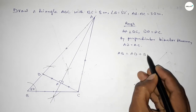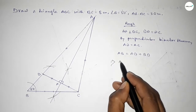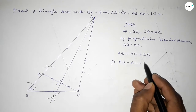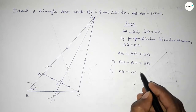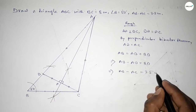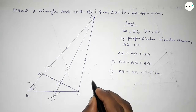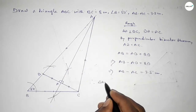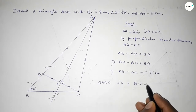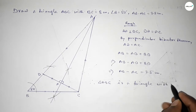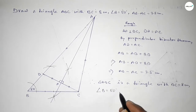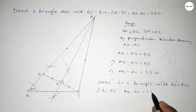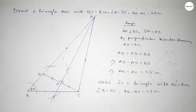Now we can write AB equals AD plus BD, which implies AB minus AD equals BD, and since AD equals AC, AB minus AC equals BD equals 3.5 centimeters. That's the proof. Therefore triangle ABC is the required triangle with BC equal to 8 centimeters, angle B equal to 50 degrees, and AB minus AC equal to 3.5 centimeters. Thanks for watching — please share it with your friends.